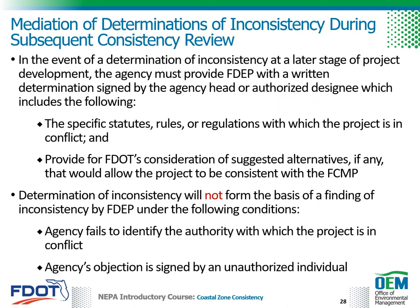If a state agency determines that a project is inconsistent at a later stage of project development, the agency must provide FDEP with a written determination signed by the agency head or authorized designee, which includes: one, the specific statutes, rules, or regulations with which the project is in conflict; and two, suggested alternatives, if any, that would allow the project to be consistent with the Florida Coastal Management Program. Where an agency fails to identify the authority with which the project is in conflict, or the agency's objection is signed by an unauthorized individual, the determination will not form the basis of a finding of inconsistency by FDEP, the lead coastal management agency.